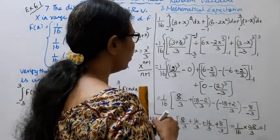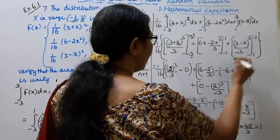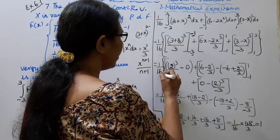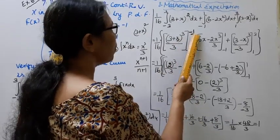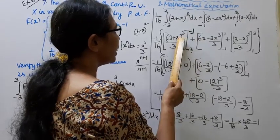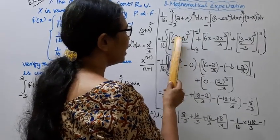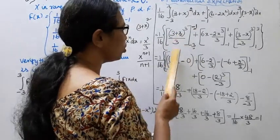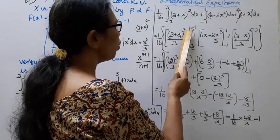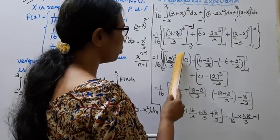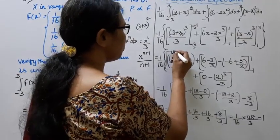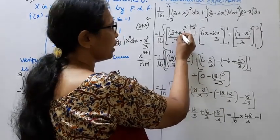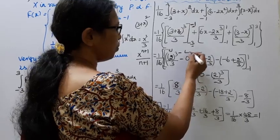For the first integral, multiply by 1/16. Upper limit x = -1: (3 + (-1))³ / 3 = (2)³ / 3 = 8/3. Lower limit x = -3: (3 + (-3))³ / 3 = 0³ / 3 = 0. So the first part gives 1/16 × (8/3 - 0) = 8/48.